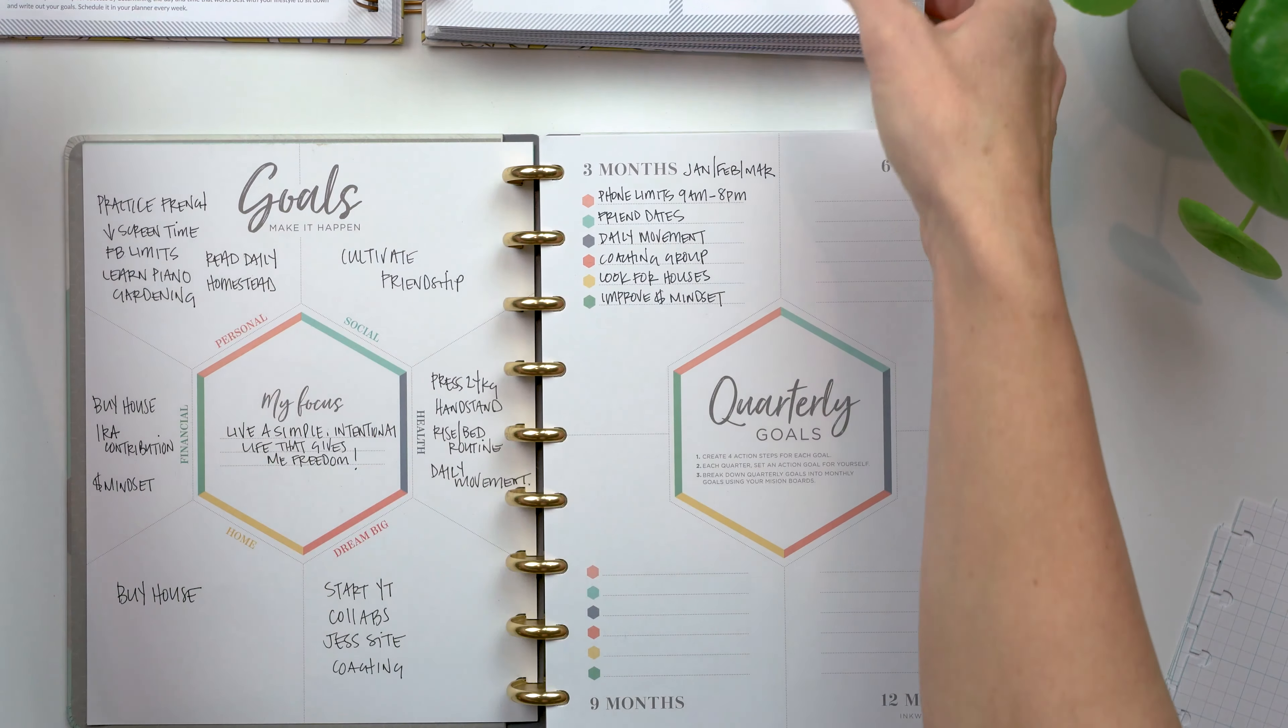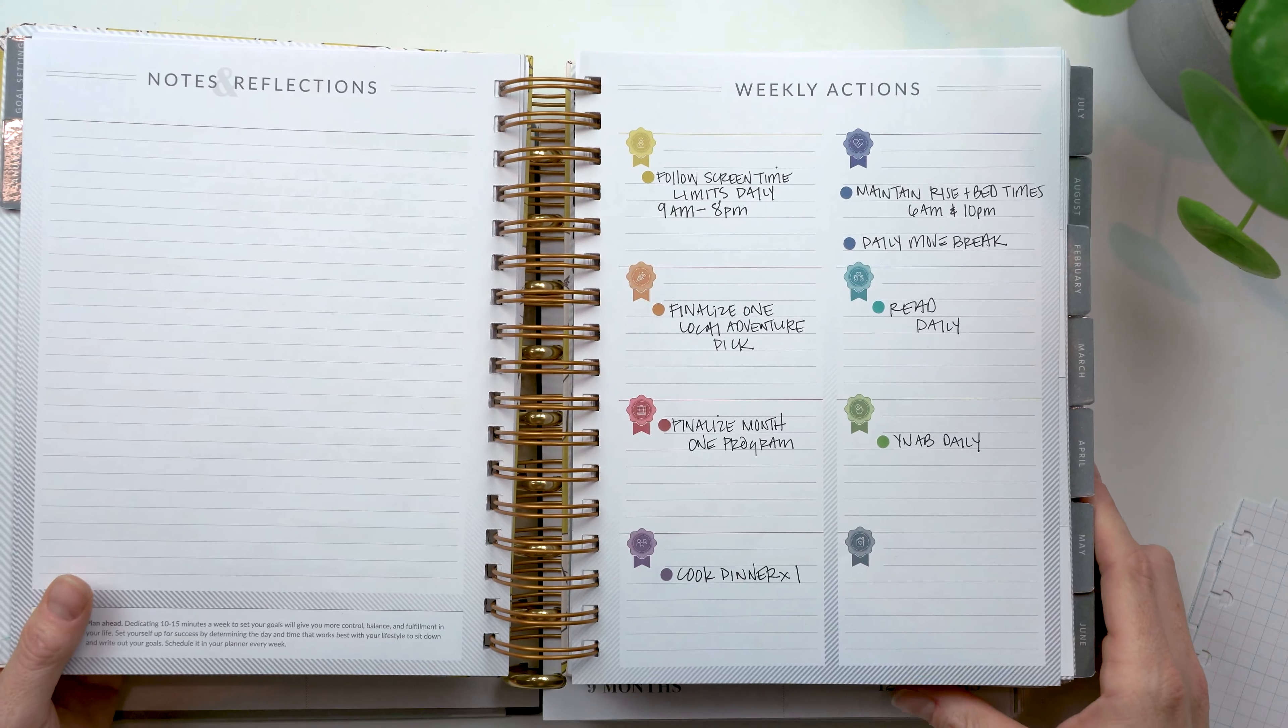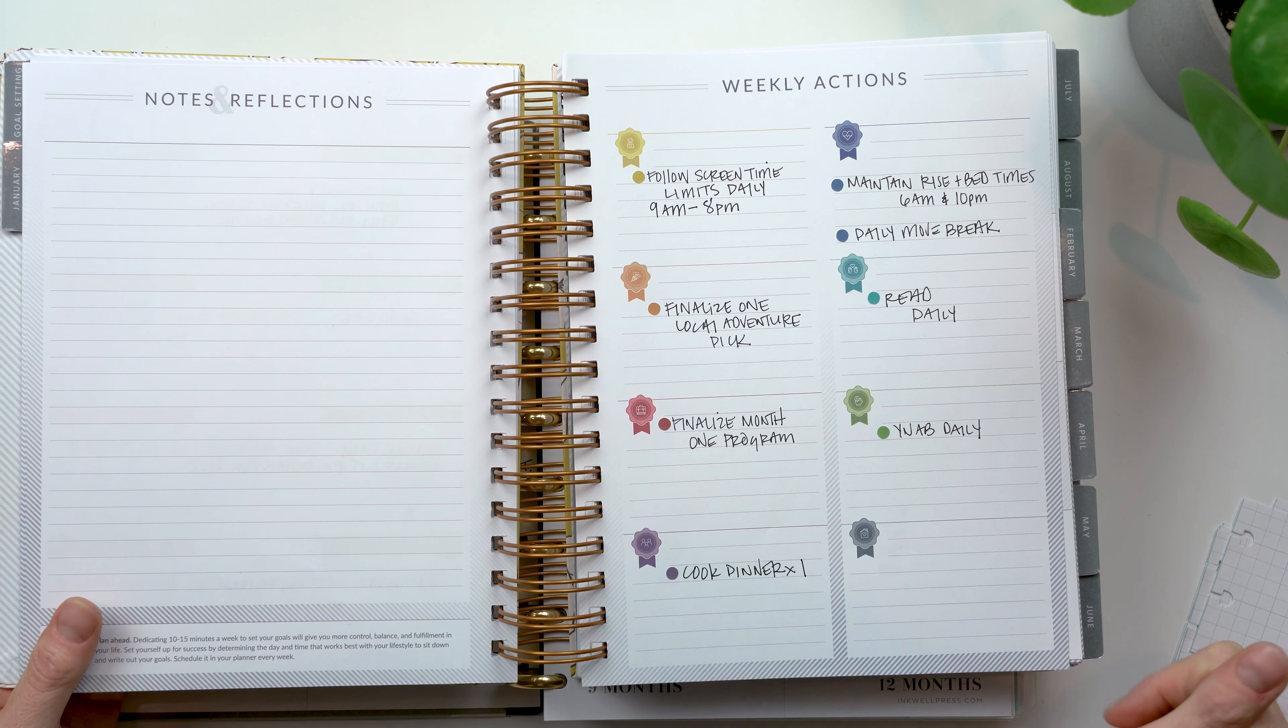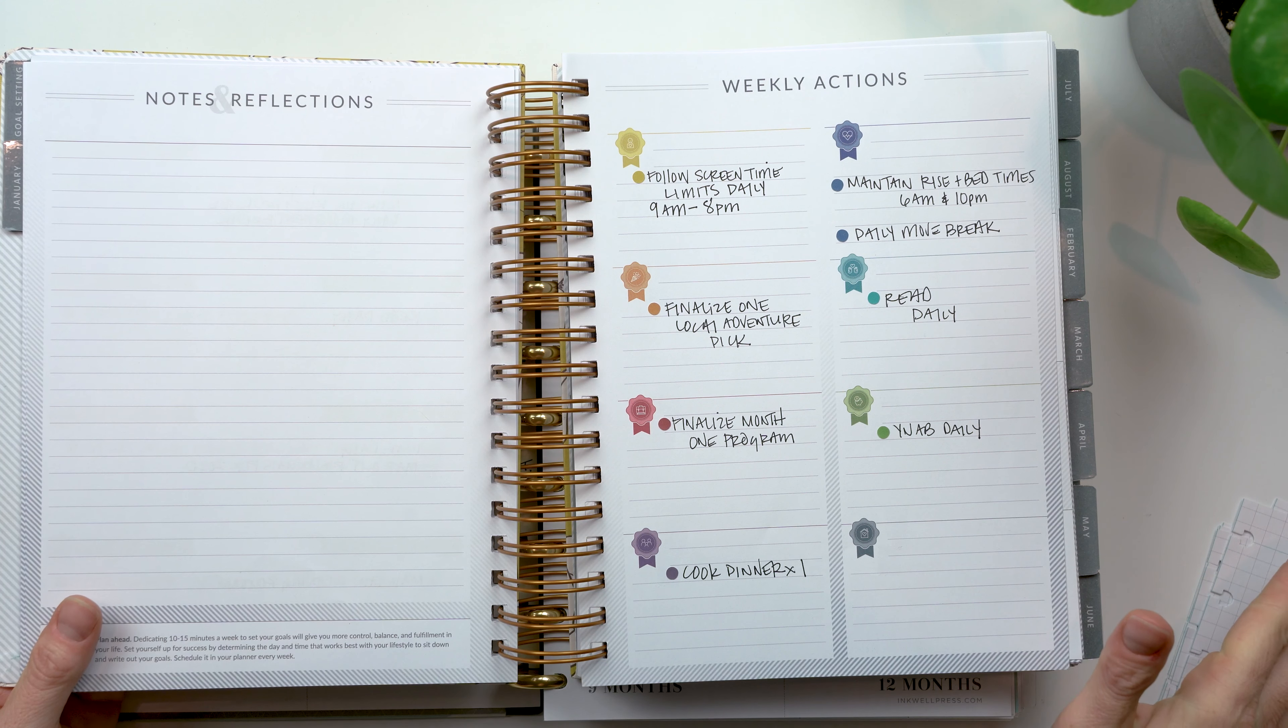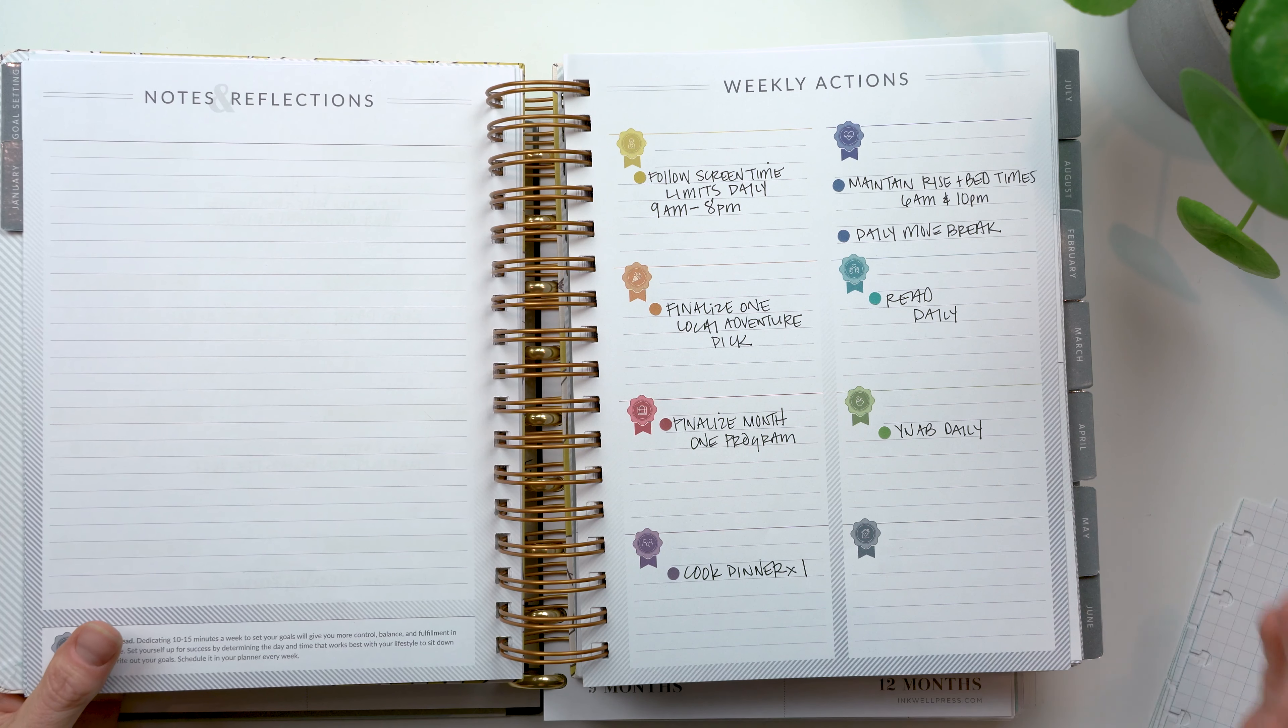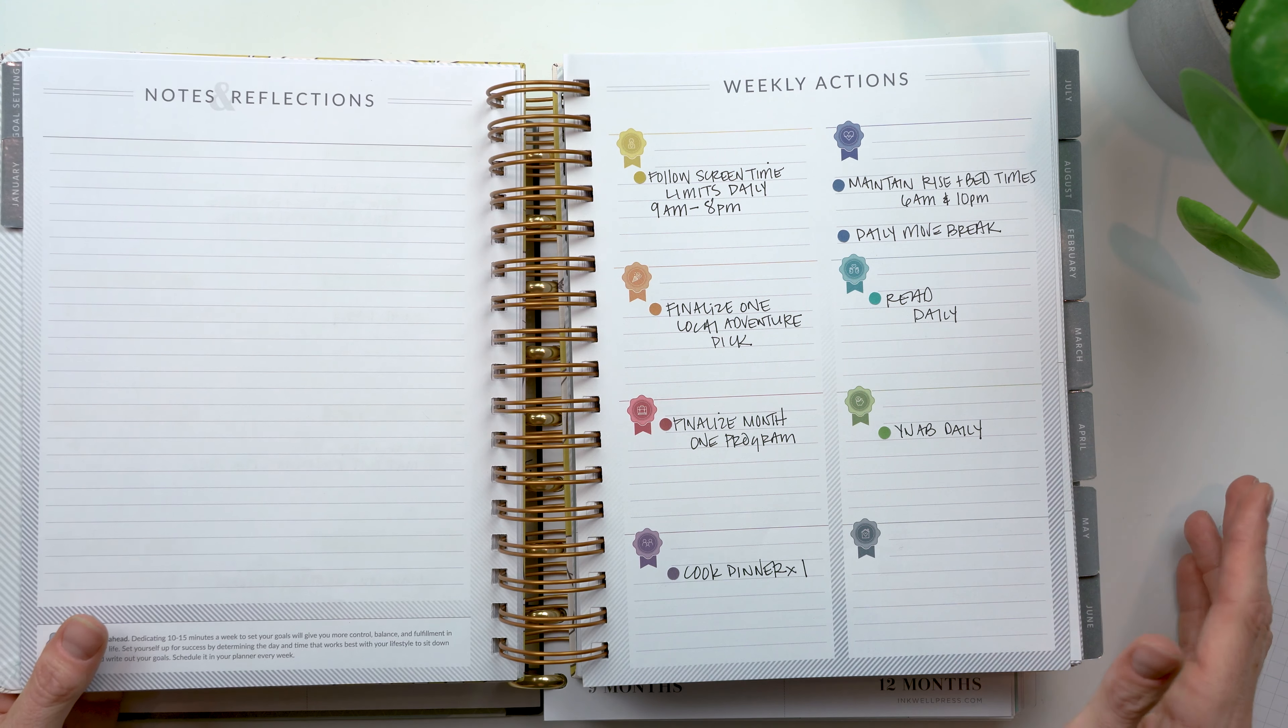So I think obviously if you're buying Moxie, this is seamless and it's built in this color coding system that makes a lot of sense. Okay. So that I think before I get too much more in depth, I think is the major differences between these two particular planners. And I think both of them will work for different people.